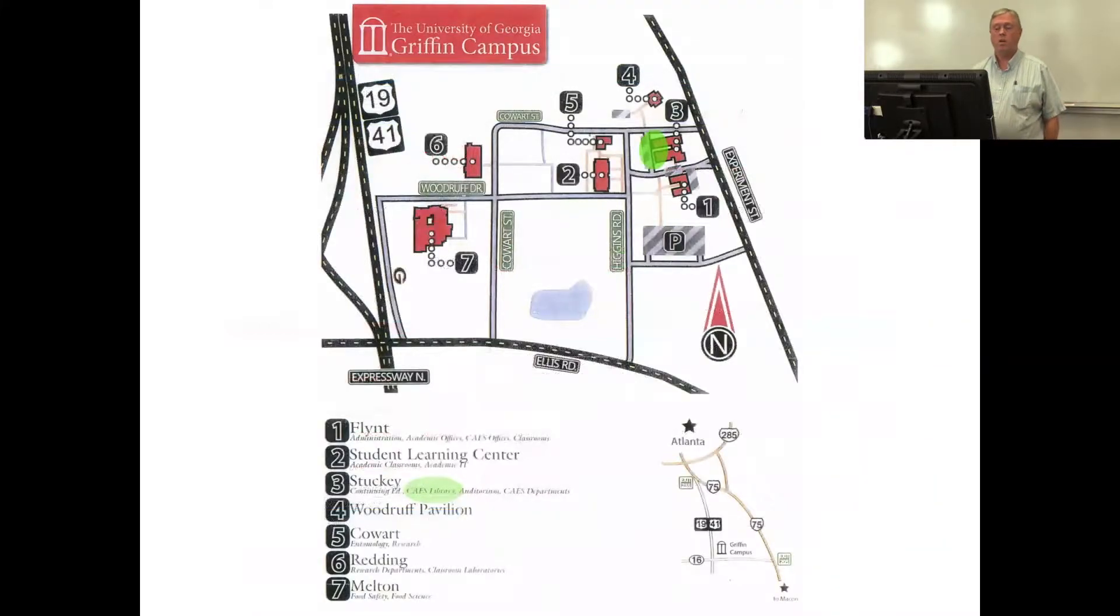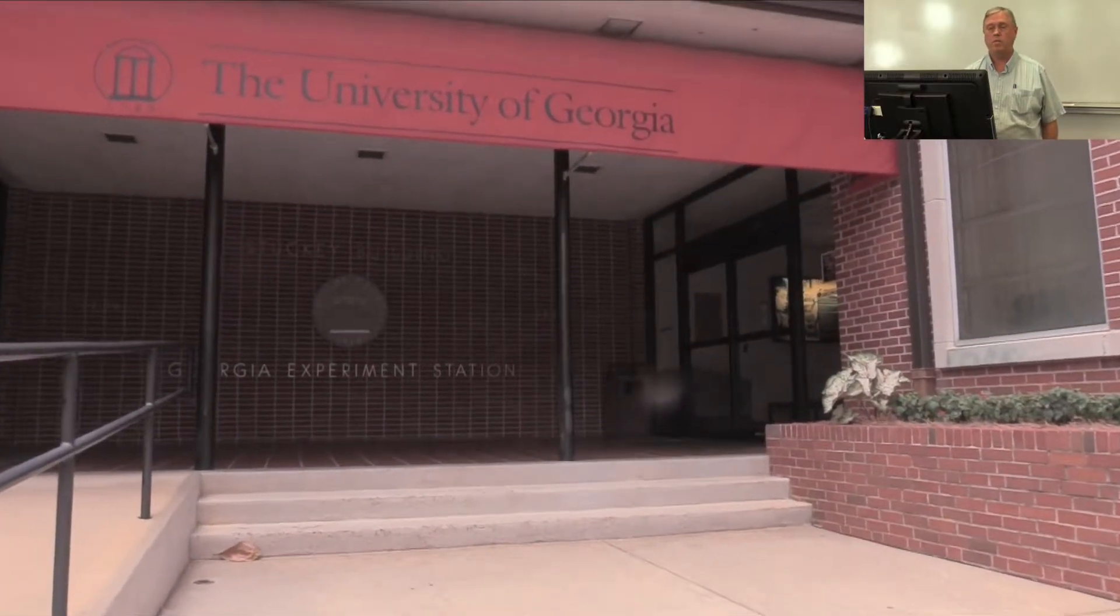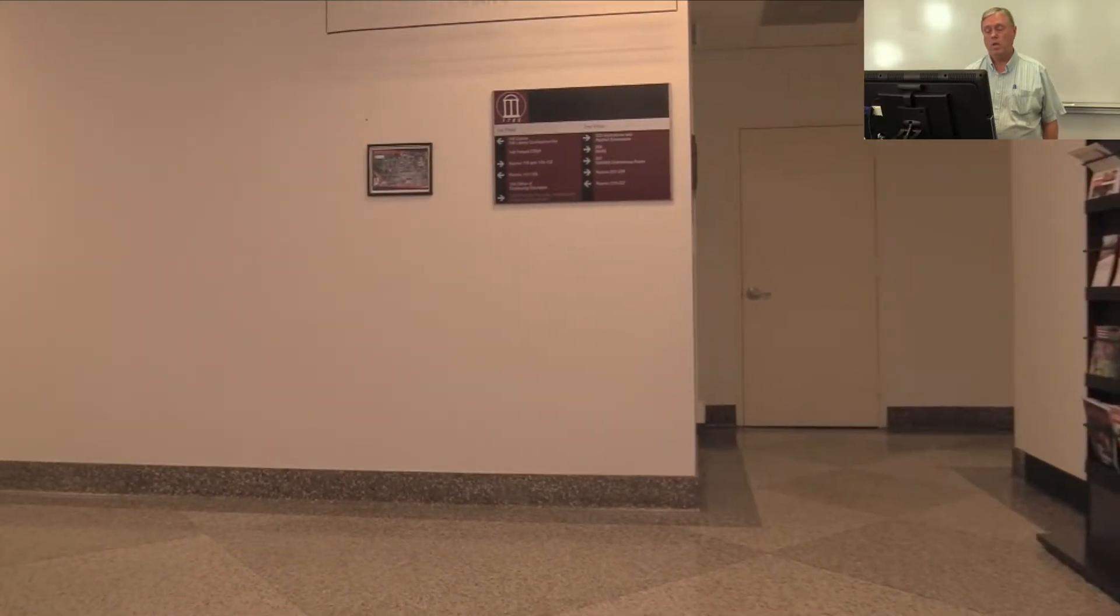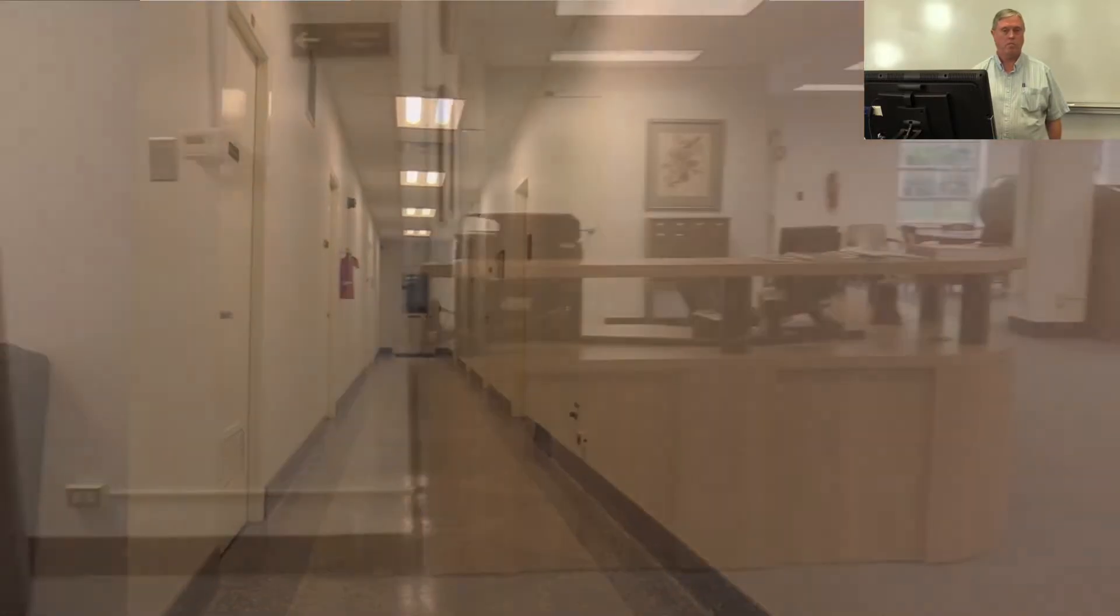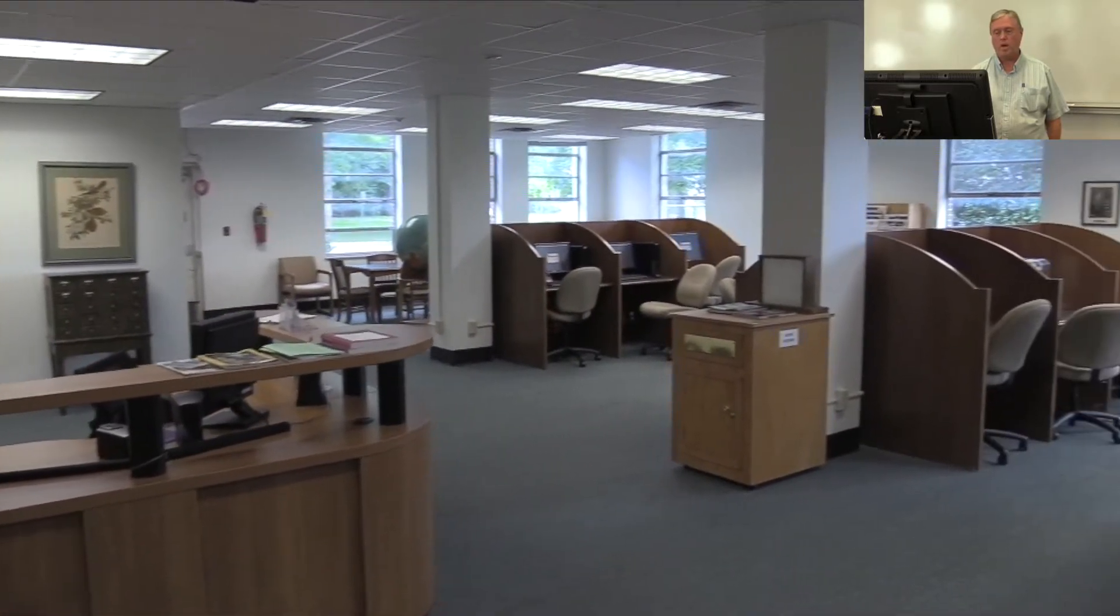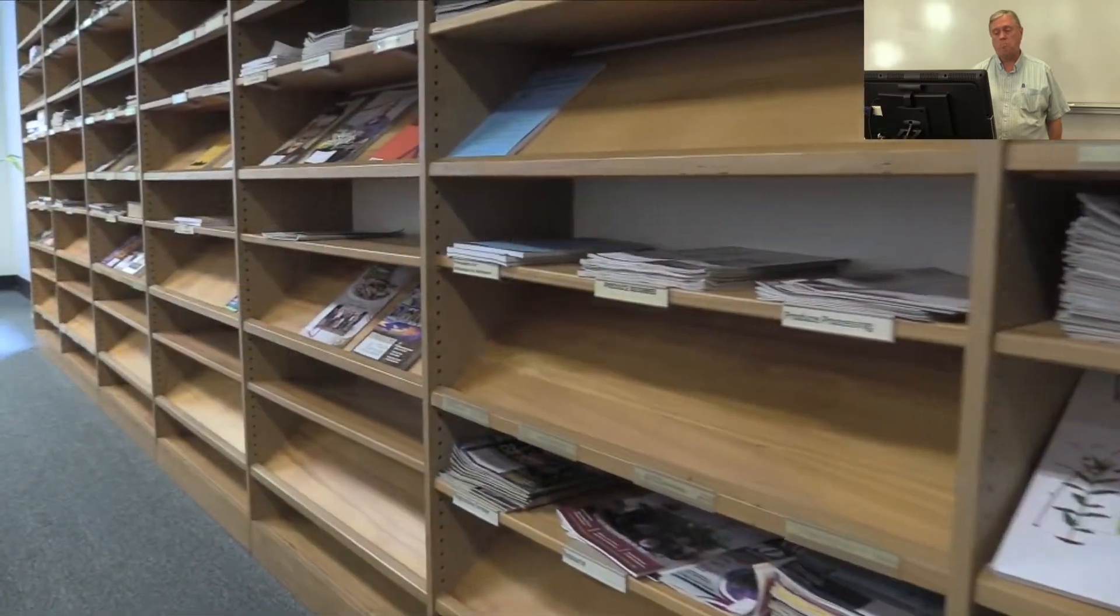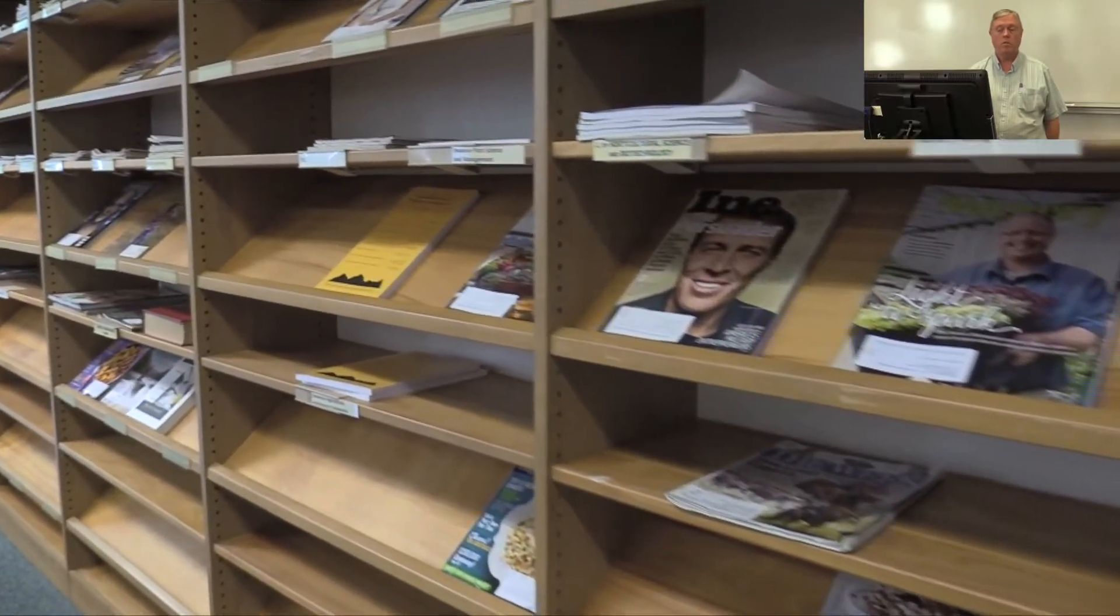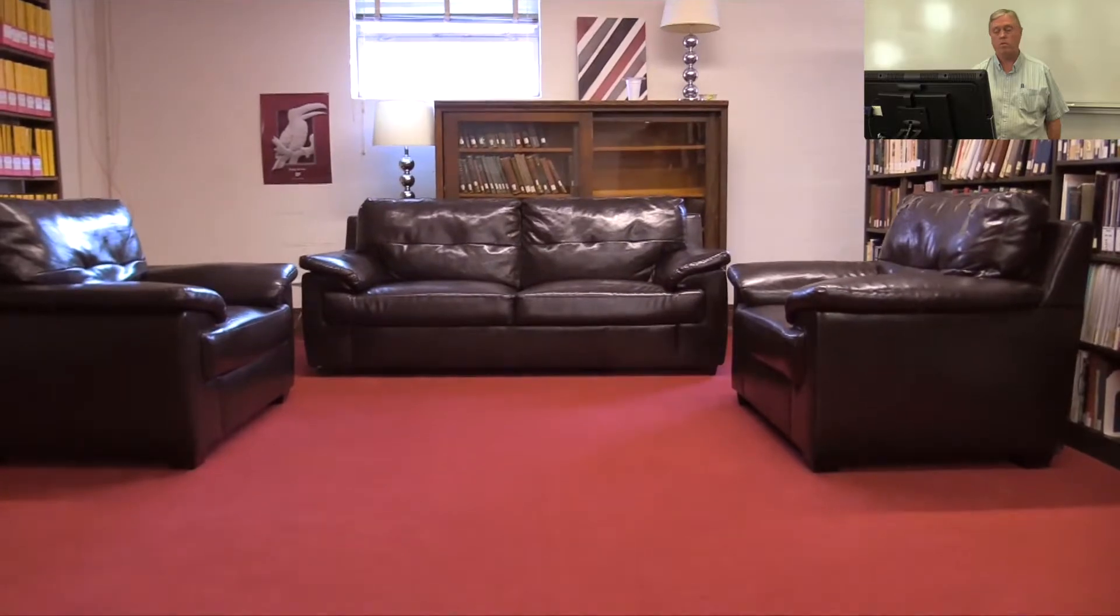So if you haven't been here for very long, our library is located here in the Stuckey Building. And to get there, go in this entrance. This entrance faces the Flint Building. Go in here, take a right, follow the signs, we're at the end of the hall. And our library is open to you 24-7 with an access card, with your student card. And I'm there typically Monday to Friday, 8-5. And in our library, we have a small selection of heavily used, very popular journals. You're welcome to read those in the library. We also have a photocopier, we have a lounge area, and we have a conference room that you can use as well.